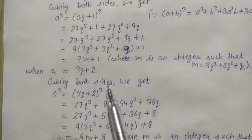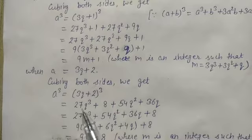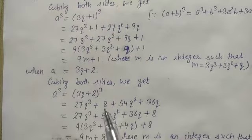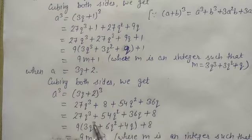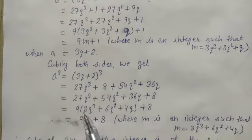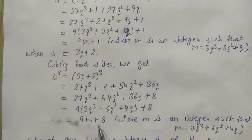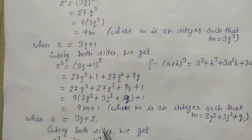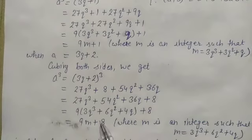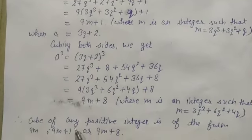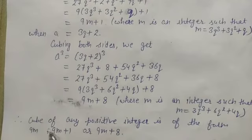When a equals to 3q+2, cubing both sides, we get 27q³+8+54q²+36q. Rearranging and taking 9 common: 9(3q³+6q²+4q)+8. Putting 3q³+6q²+4q equals m, where m is an integer, we get a³ equals 9m+8. Therefore the cube of any positive integer is of the form 9m, 9m+1, or 9m+8.